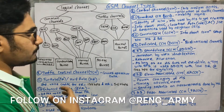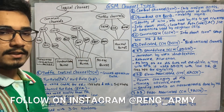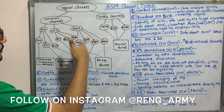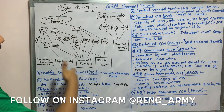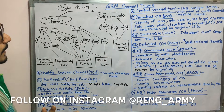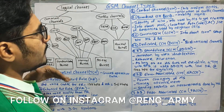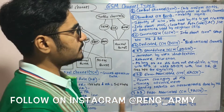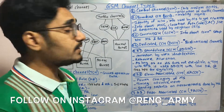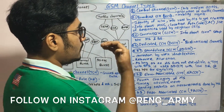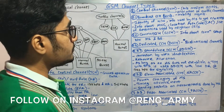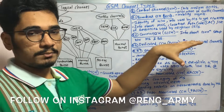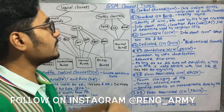The CCCH, or common control channel, carries information about the connection setup established between the MS and the BS. It stores all relevant information including the user's profile and everything related to the connection setup between the mobile station and the base station.